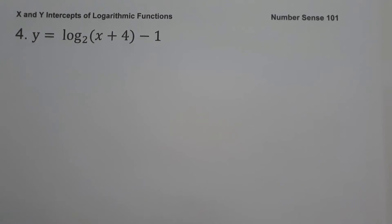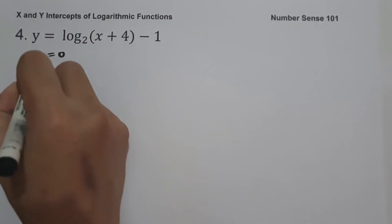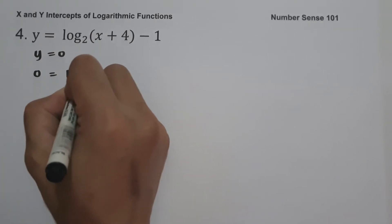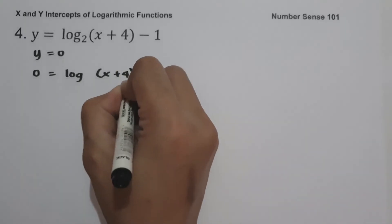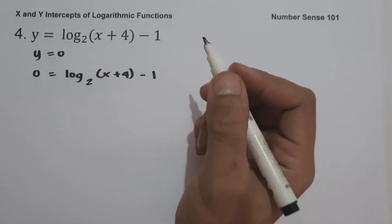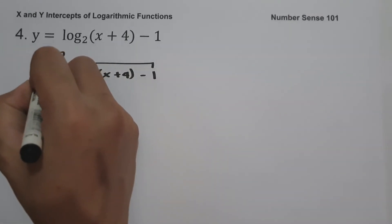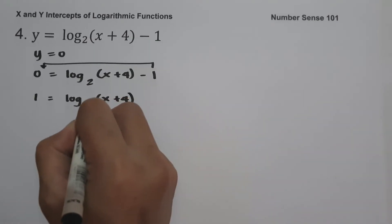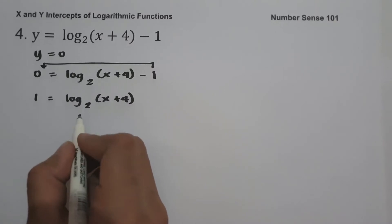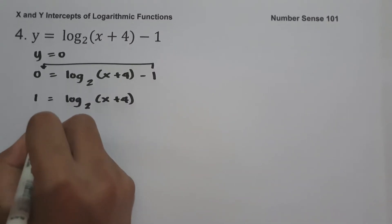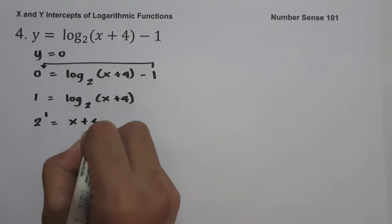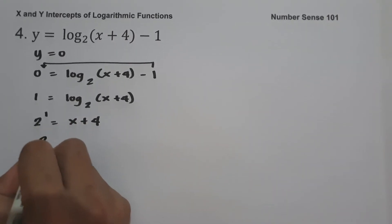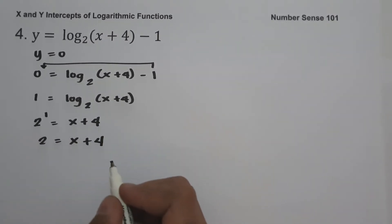On example number 4: y equals log(x + 4) base 2 minus 1. To find the value of the x-intercept, let us set y equal to 0. So we have 0 equals log(x + 4) base 2 minus 1. Let us move negative 1 to the side of 0, giving us 1 equals log(x + 4) base 2. Let us write this in exponential form: 2 raised to 1 equals x plus 4, so 2 equals x plus 4.